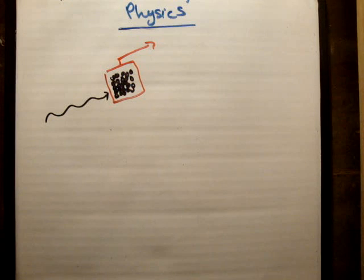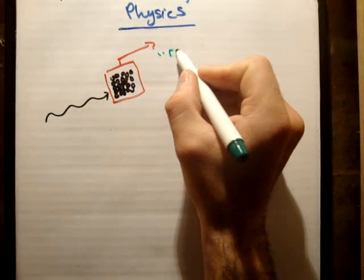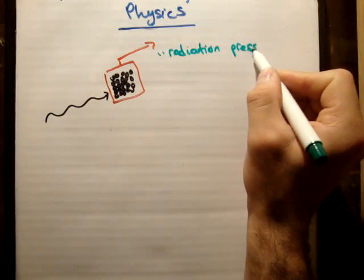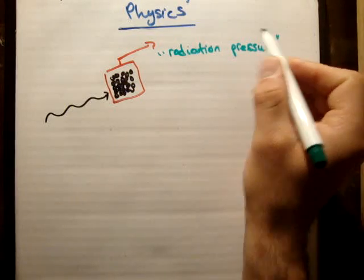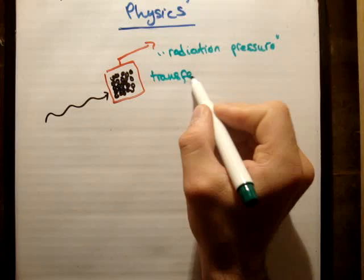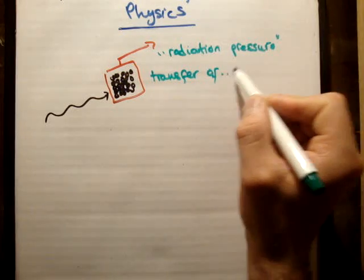So instead of using a hoover, you just shine a light at something and all your dust will go away. Well, that does happen in space. And it's called a thing called radiation pressure. And I suppose that the theory is that there is a transfer of what? Take one guess. Momentum.